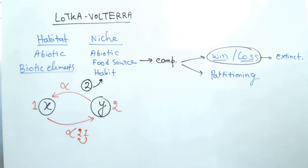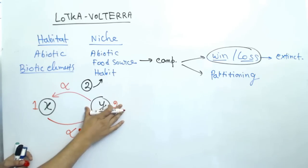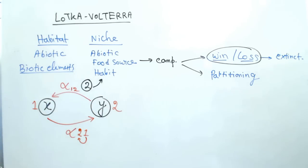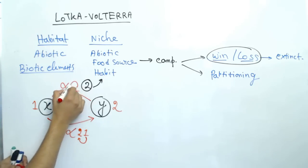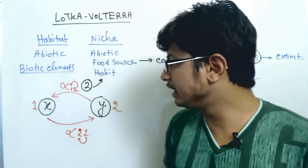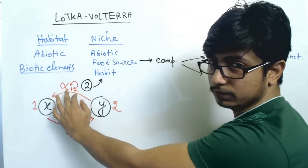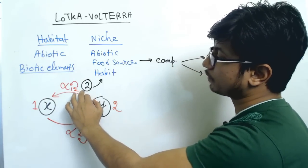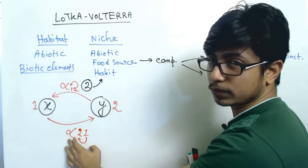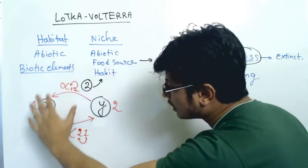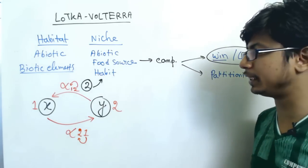Alpha 21 means the amount of competition exerted by species 1 on species 2, while the amount of competition exerted by species 2 on species 1 is known as alpha 12. So alpha 12 is the competition of species 2 on 1, and alpha 21 is the competition of species 1 on 2.